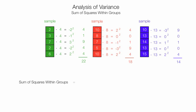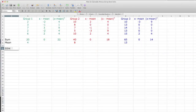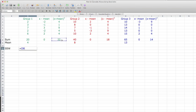The Sum of Squares within groups is equal to 22 plus 18 plus 14. I'm going to add them all together in Excel, and these sum up to 54. I'll use the notation SSW instead of writing the whole phrase out — it's just easier. I type in SSW, hit the equal sign, click on 22, plus 18, plus 14, and that equals 54.